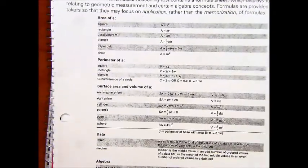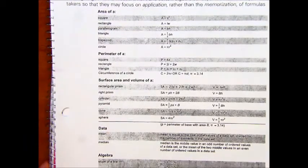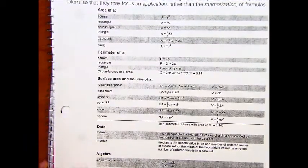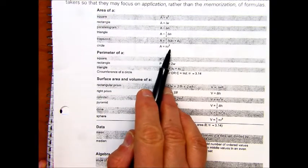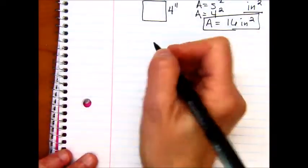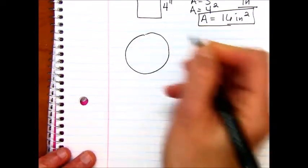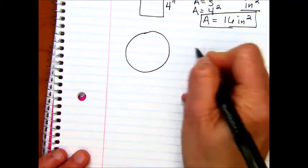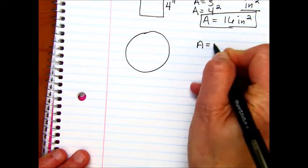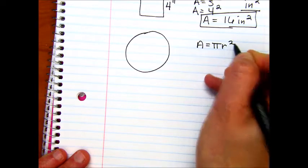Let's do another problem that has a square or an exponent in the formula. Here we've got a circle, area equals pi r squared. I'll draw a circle. So now you need to know, let me write this down, area equals pi r squared.